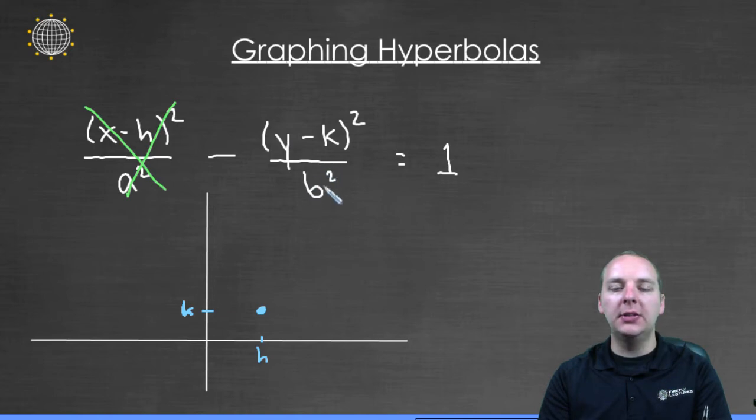And you notice what you have left is an impossible situation. Y minus k squared over b squared is definitely positive. And then this minus makes it negative. And you can't have a negative value equaling positive one. You can't have it.